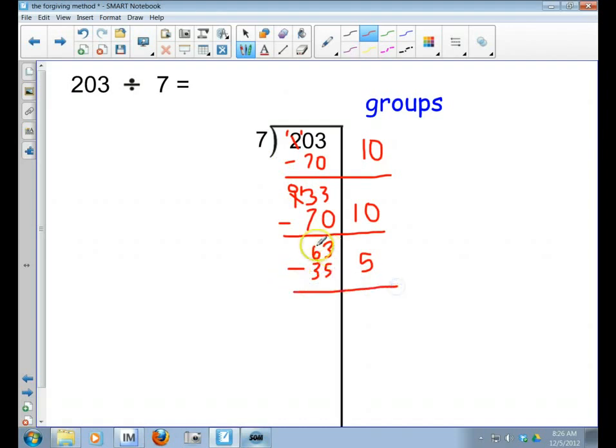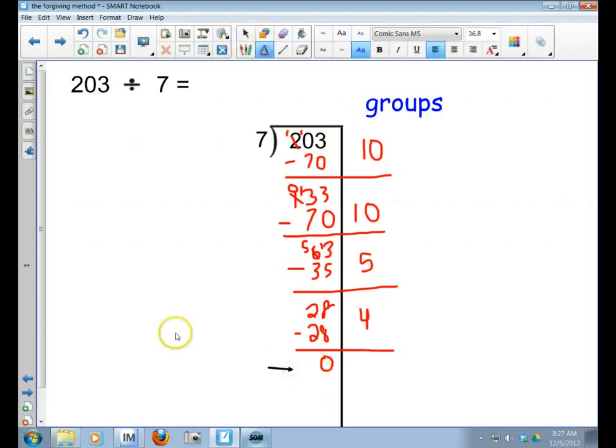Then I subtract. So 3 take away 5, can't do it, got to borrow from the 6 in the tens place, make that a 5. 13 take away 5 equals 8. 5 take away 3 equals 2. Oh, I know 7 times 4 equals 28, so then I put my 28 here. And then I subtract 28 take away 28 equals 0.